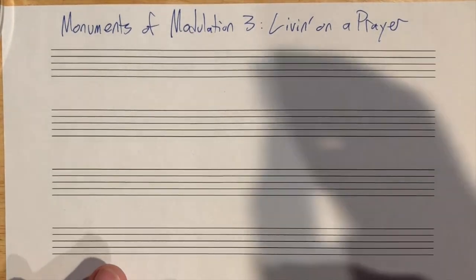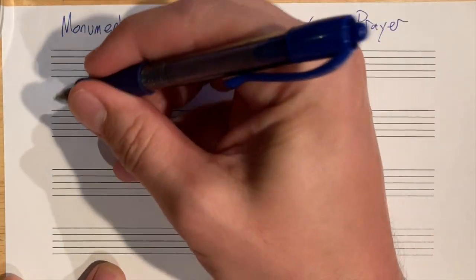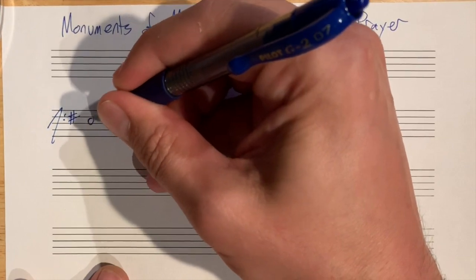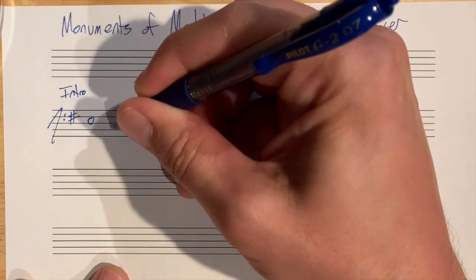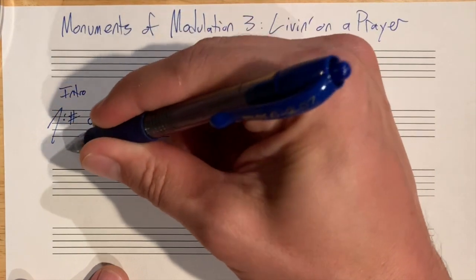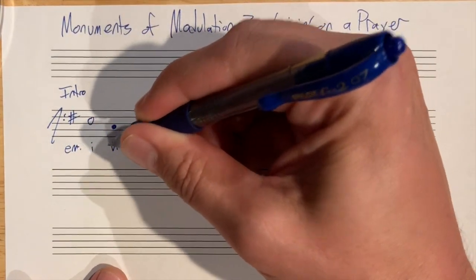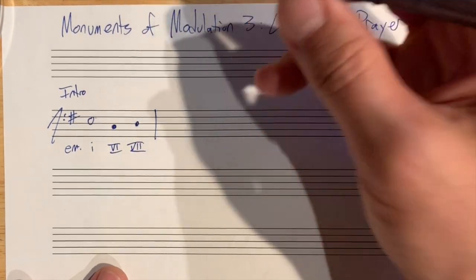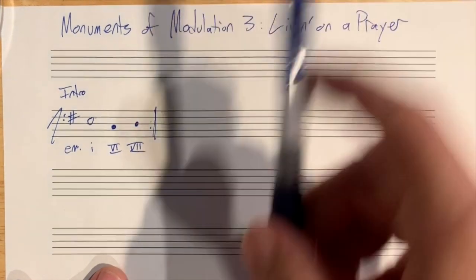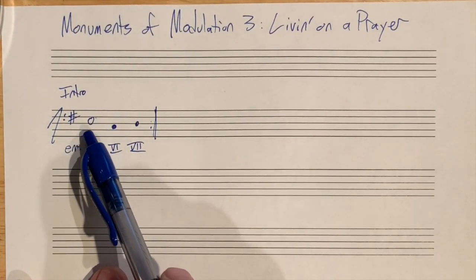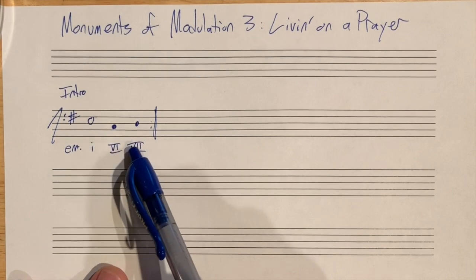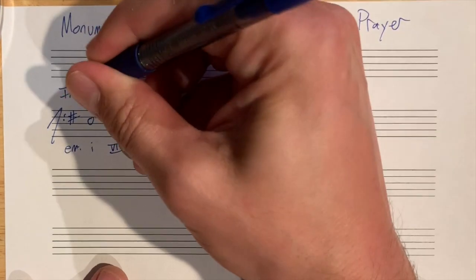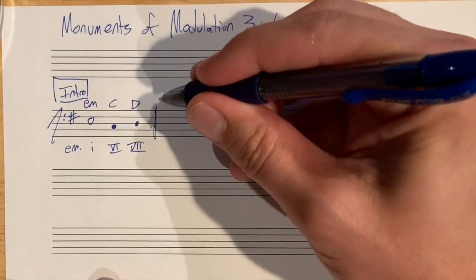Let's get there. So we got this intro. I'm just going to follow the bass line here. We got this intro. We're in the key of E minor. The intro has this E minor chord mostly, but then it sometimes hits a C chord and a D chord. The submediant and the subtonic chords.